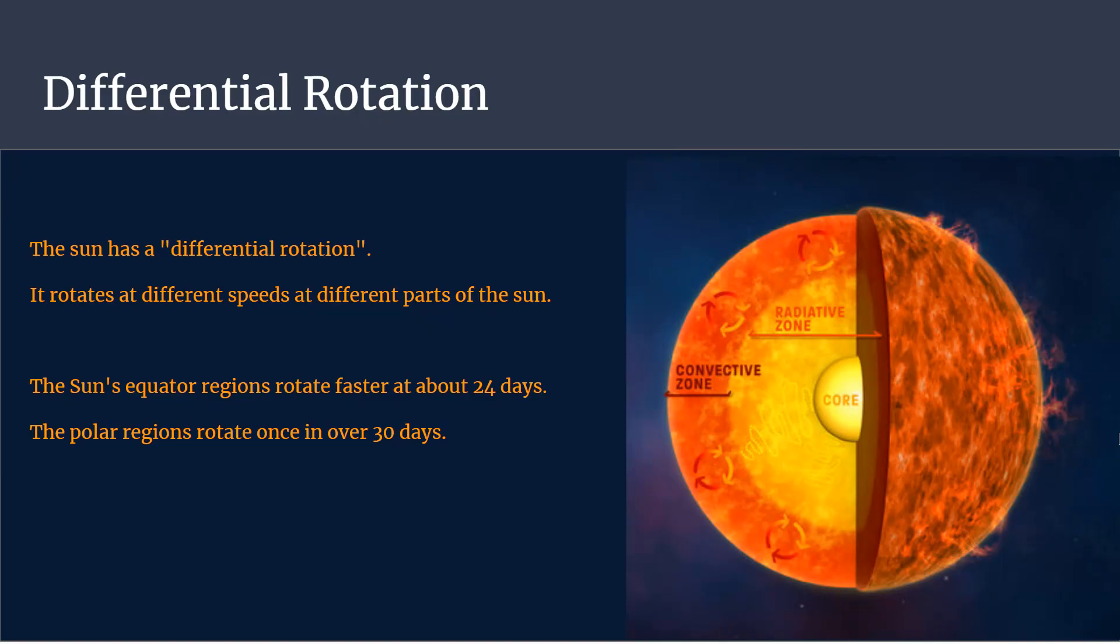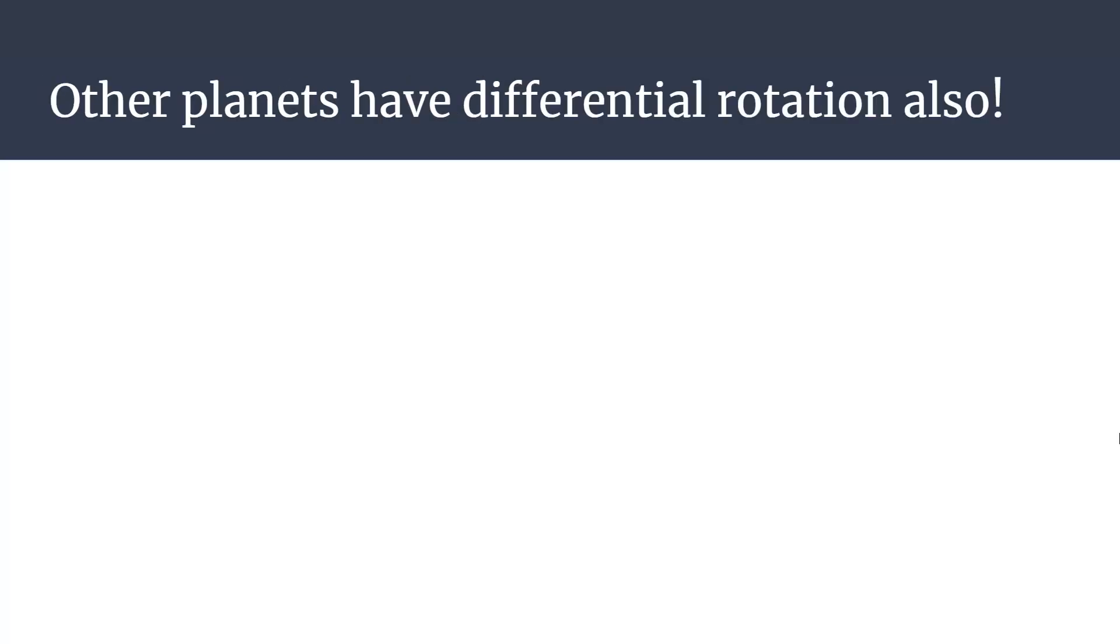While the polar regions rotate once in over 30 days. The interior layers of the sun also rotate at different speeds.